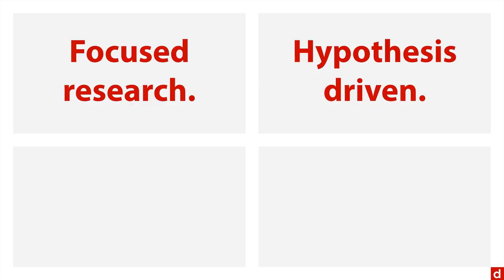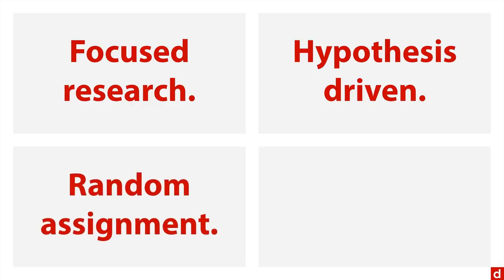A key component of all of this is that experiments almost always have random assignments. So regardless of how you got your sample, when they're in your study, you randomly assign them to one condition or another. And what that does is it balances out the pre-existing differences between groups.